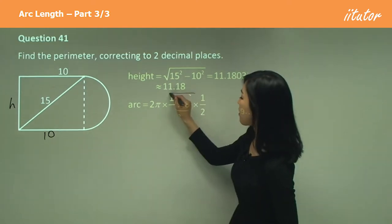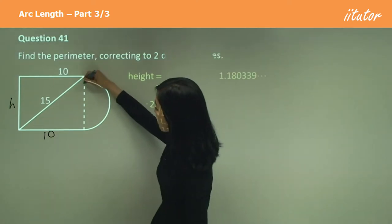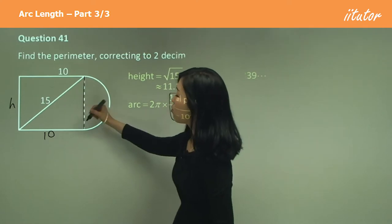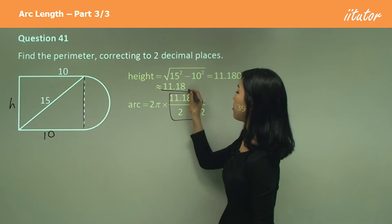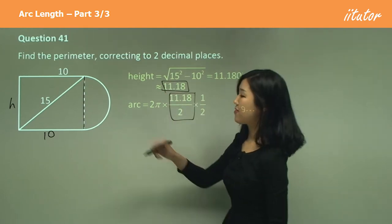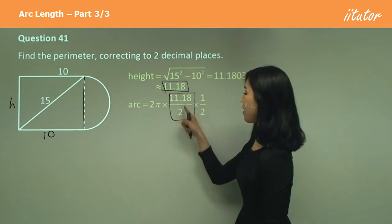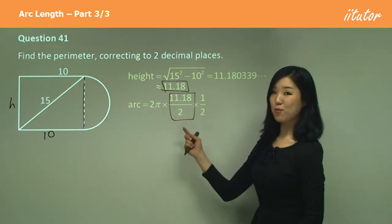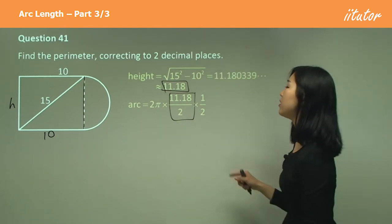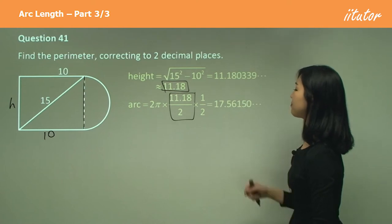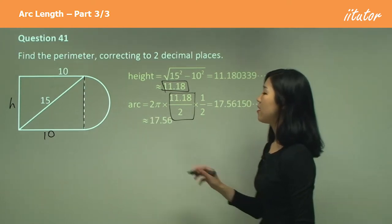Now this one here, the radius, how did we get that? Well see how the diameter is this length here, which is the same as the height, and we've just found height which is 11.18, but that's the diameter, we need the radius, don't we? So we divide it by 2. Okay, that's what I did there. 2πr times half because we only want half of the circle, and calculate that, and two decimal places 17.56, so that's the arc.